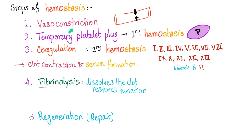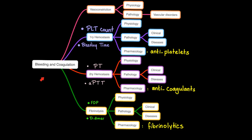Steps of hemostasis: vascular constriction, then primary hemostasis, then secondary hemostasis, then fibrinolysis, and then regeneration and repair. They go in order. If you do not have primary hemostasis, secondary hemostasis is very unlikely. If you do not have good, solid, robust secondary hemostasis, tissue regeneration is not going to happen. That's why one of the symptoms of factor 10 deficiency is bleeding and delayed wound healing.